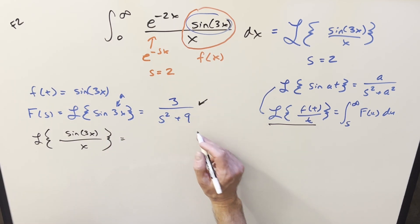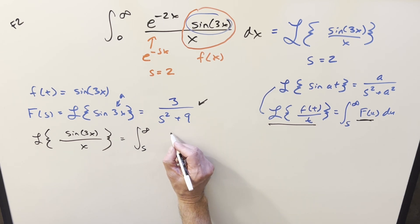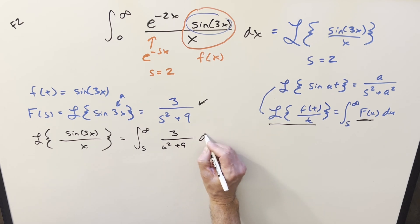That's no problem, we can just change the variable to u, or I could have just done it in terms of u in the first place. It really doesn't matter. The variables here are just interchangeable, dummy variables. So what's going to happen? We have our integral from s to infinity. We need to put this in terms of u, so this is going to become 3 over u squared plus 9 du.